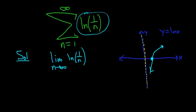So let's think about what's happening here. So as n goes to infinity, 1 over n approaches zero. So now we need to figure out what happens to the natural log of 1 over n, because that's what's in our limit.